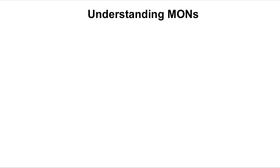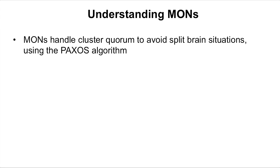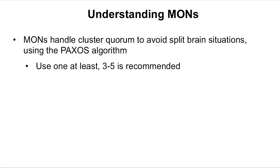Next there is the MONs. The MON handles cluster quorum to avoid split-brain situations, using the Paxos algorithm. You should at least use one MON, of course, but when you are using one MON you don't really have a cluster. So between 3 and 5 is the recommended amount of MONs.